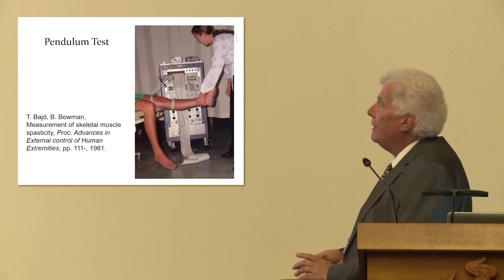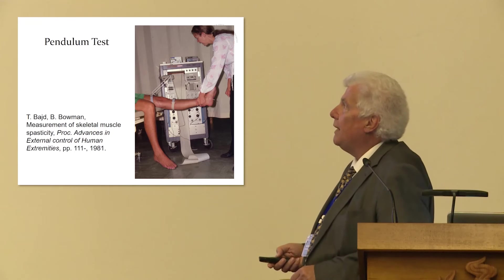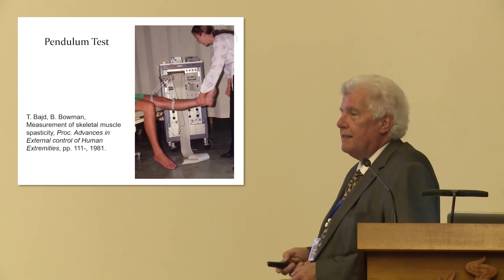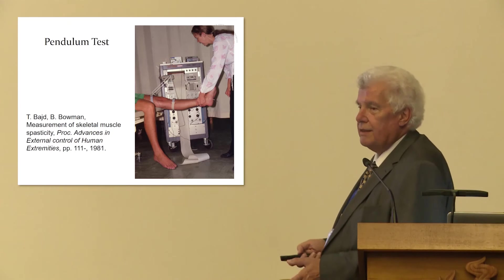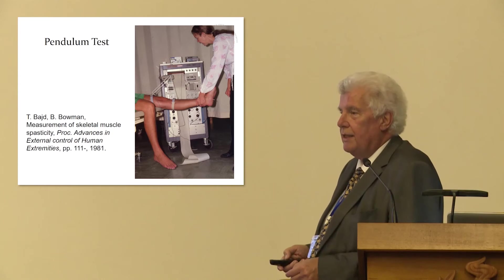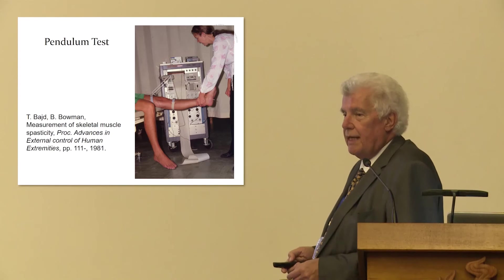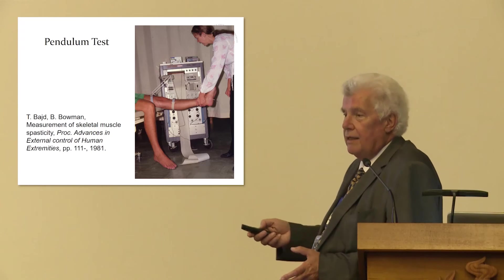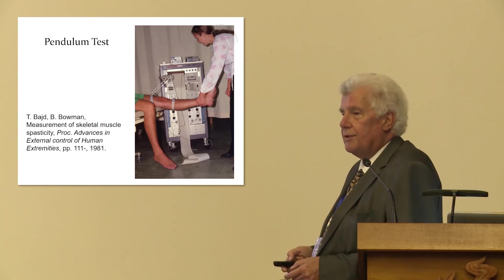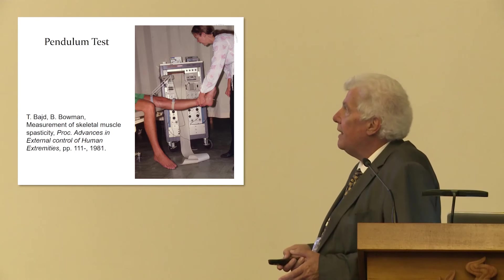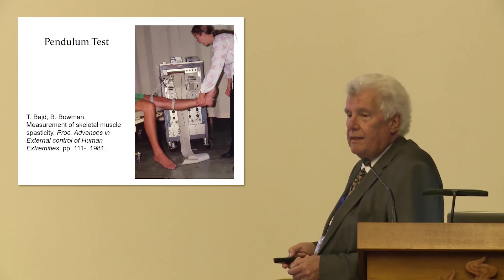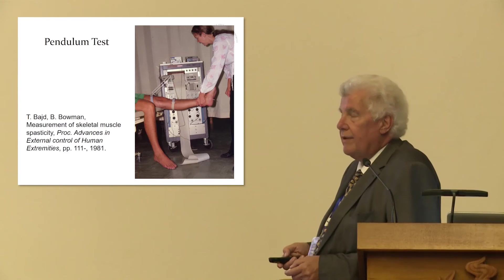As the next example, I will say a few words about pendulum test and collaboration between Dejan Popovic and myself. Spasticity is something that occurs in patients after central neuron lesion. Mainly, these are hemiplegic patients and spinal cord injured patients. Spasticity is something which is tested by therapists, so that they induce a movement and they feel the resistance to this induced movement. But instead of inducing the movement, we were using gravity in order to measure the spasticity in the muscles governing the knee joint.